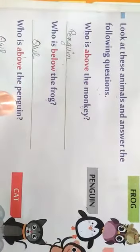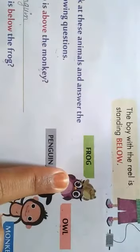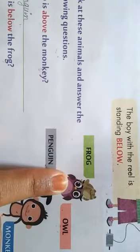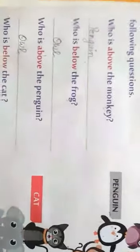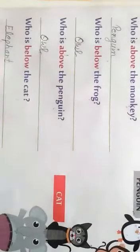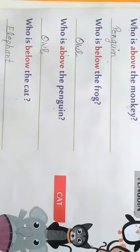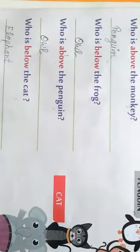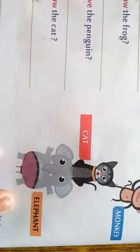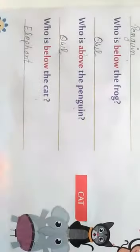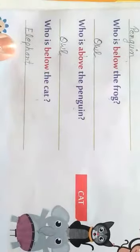Who is above the penguin? Penguin ke upar kaun hai? Yes, the owl — so we write owl. Who is below the cat? Cat ke neche kaun hai? Yes, the elephant — so we write elephant.